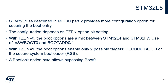STM32L5, as described in MOOC part 2, provides more configuration options for securing the boot entry. The configuration depends on the TZEN option bit setting. When TZEN equals 0, the boot options are a mix between L4 and F7, using nSoftware_Boot0 and boot address 0 and 1. When TZEN equals 1, the boot option enables only two possible targets: one is the secure boot address 0, and the other is the secure system bootloader, also known as RSS. On L5, there is also one additional boot lock option, which will bypass the boot0 configuration.